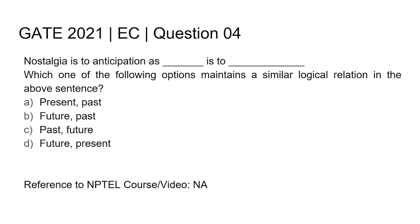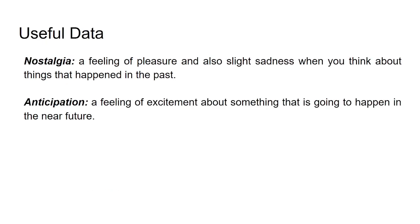This is GATE 2021 Electronics and Communication Engineering, question number 4. The question is: 'Nostalgia is to anticipation as blank is to blank.' Which one of the following options maintains a similar logical relation? Option A: present, past. Option B: future, past. Option C: past, future. Option D: future, present.